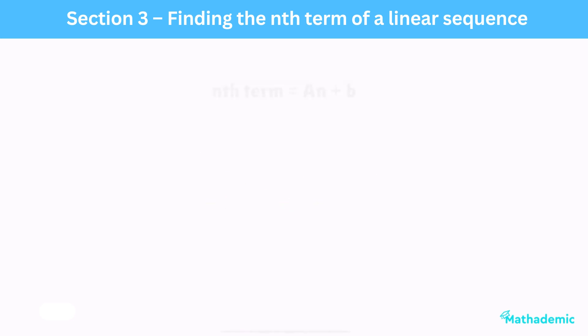Right, onto a fundamental part of this video. The nth term of a linear sequence is always of the form an plus b. Different textbooks will use different letters here, but that's not the important part. The key is knowing that the value in front of n is always the common difference, and b is the difference between a and the first term. But, like with most cases, it's much easier to understand this with an example.